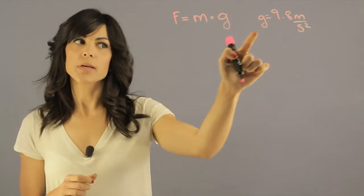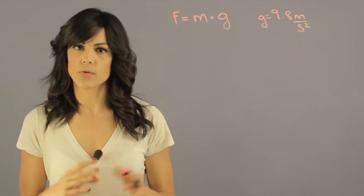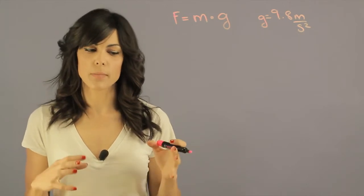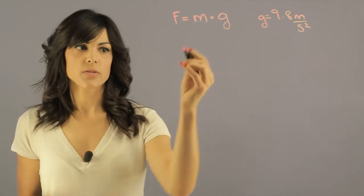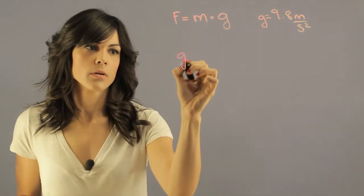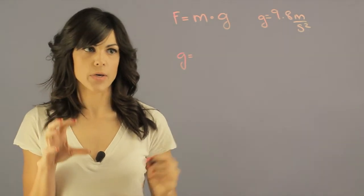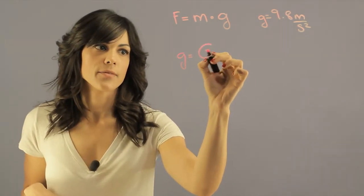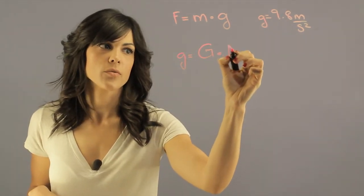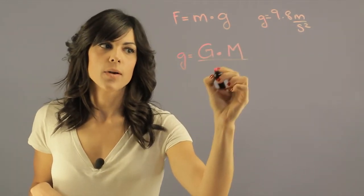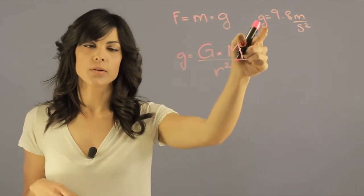How do we get this gravitational strength? I'm going to show you how to derive this for any mass, and this is where the planet's mass really comes into play. To end up with this g, we use the gravitational equation: the gravitational constant G times the mass of the planet divided by the radius of the planet squared. This gives you the gravitational strength.